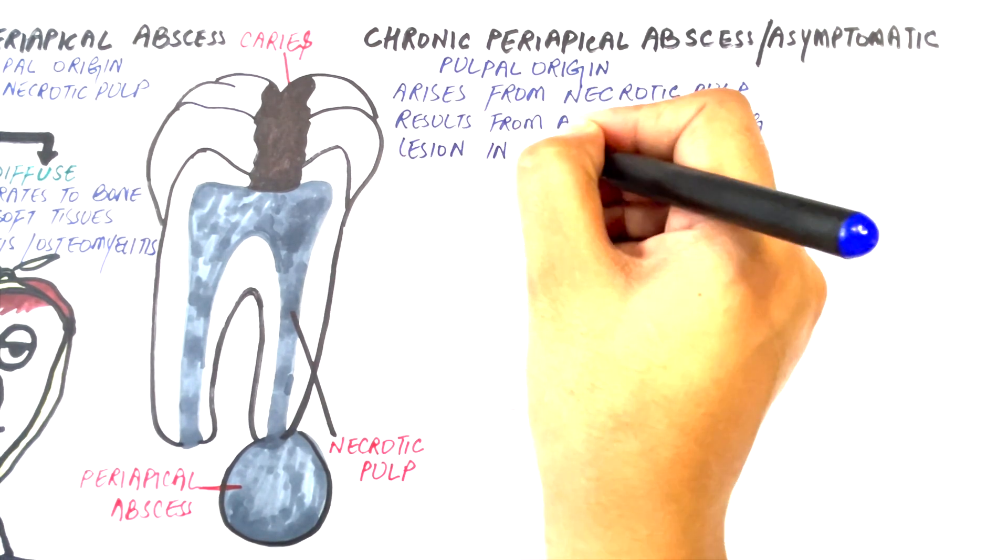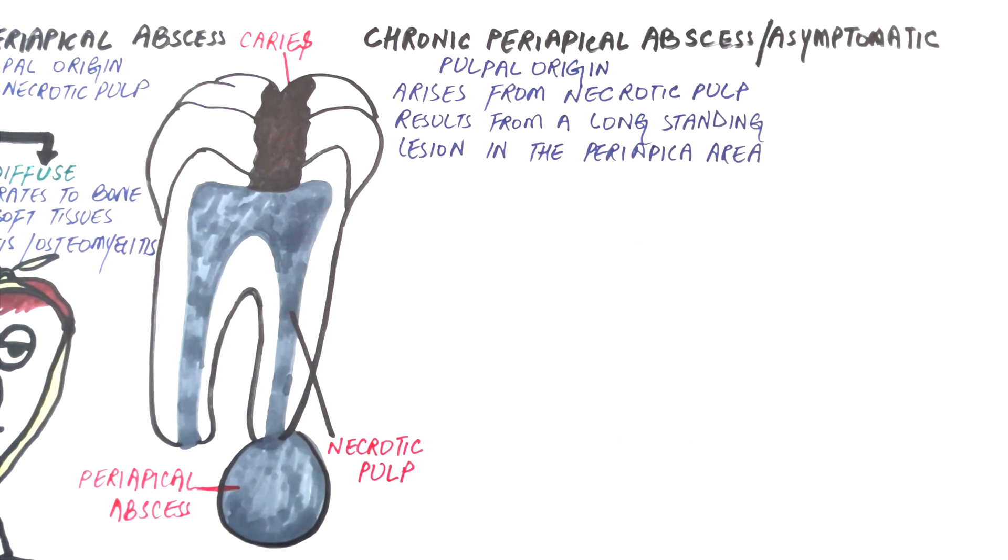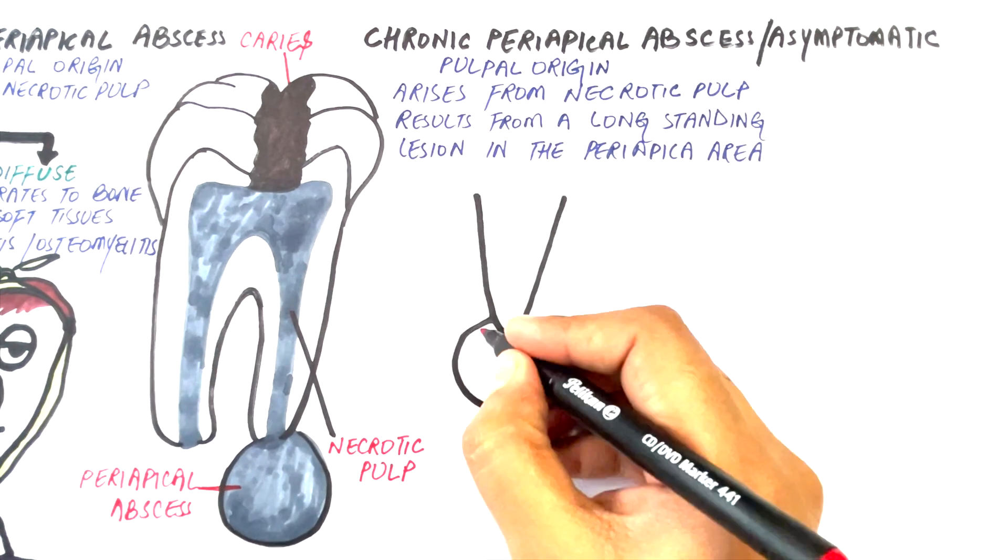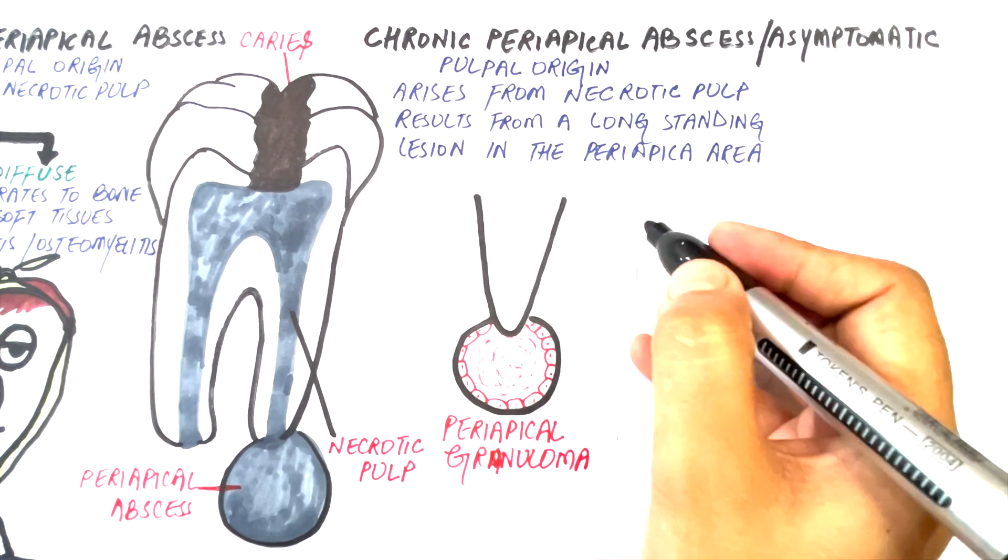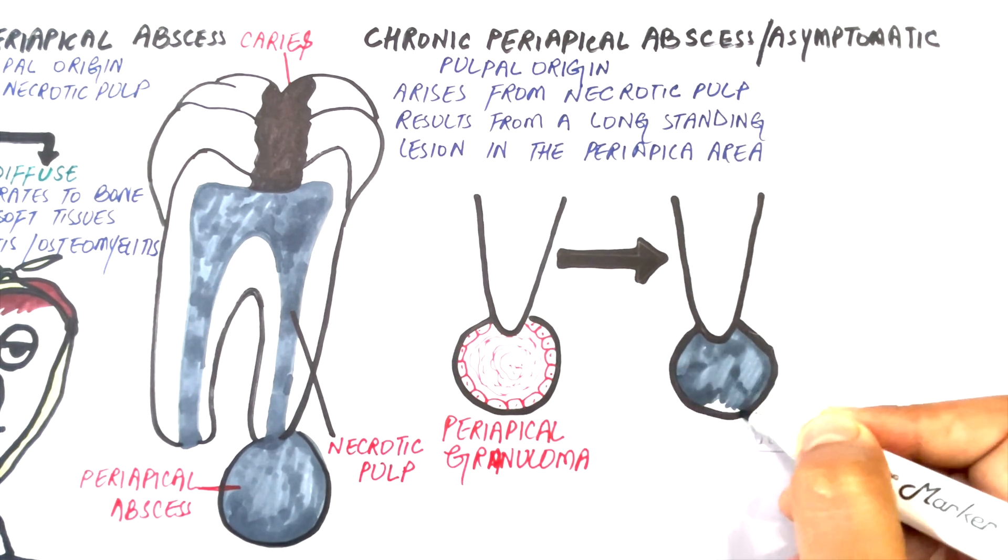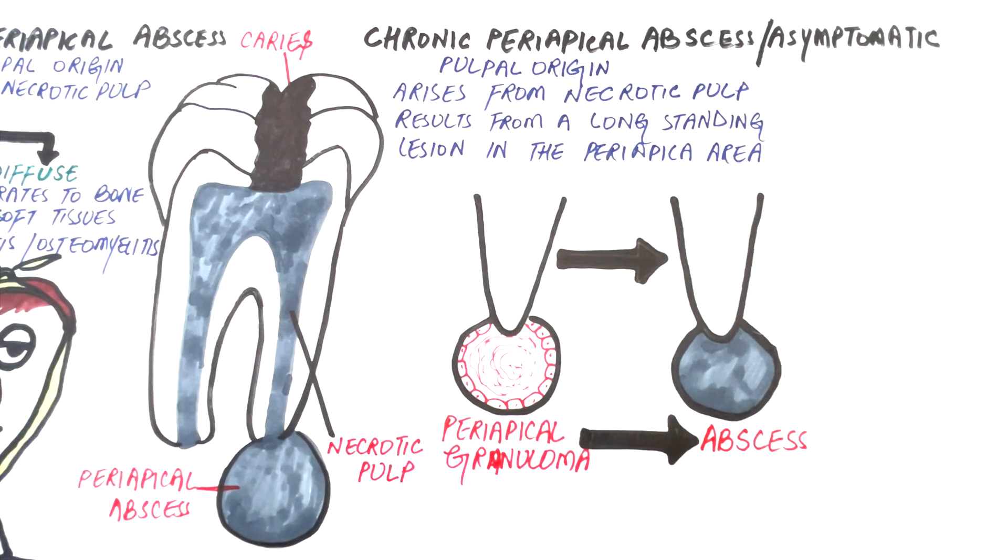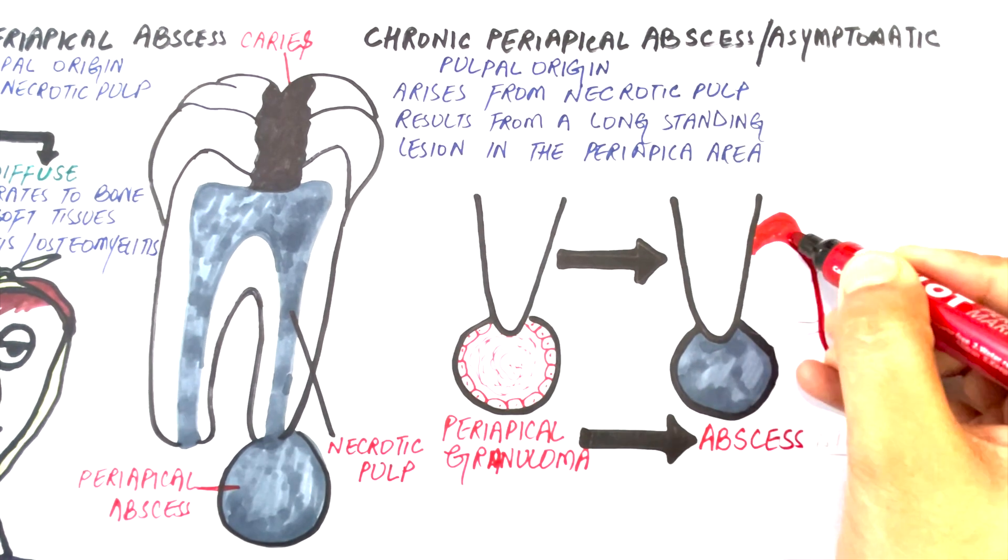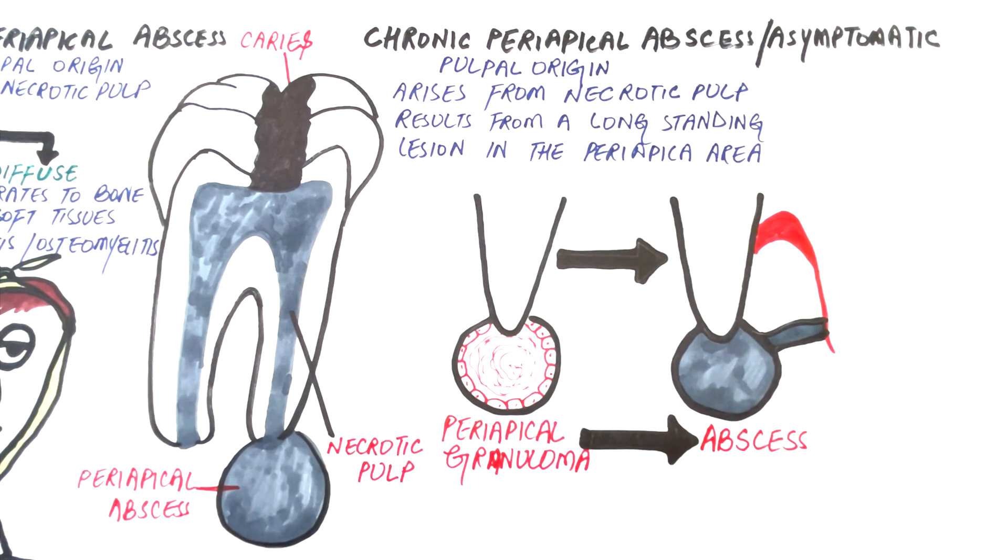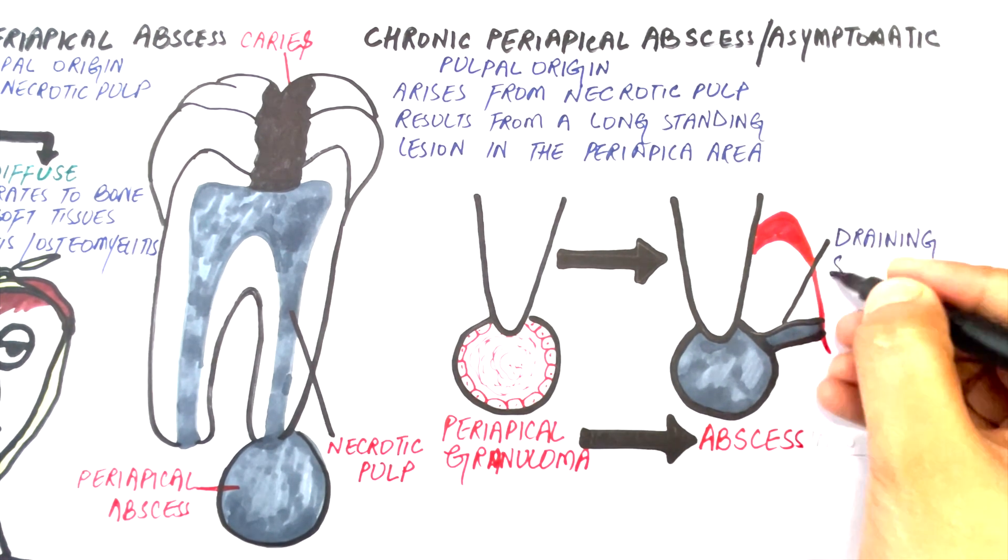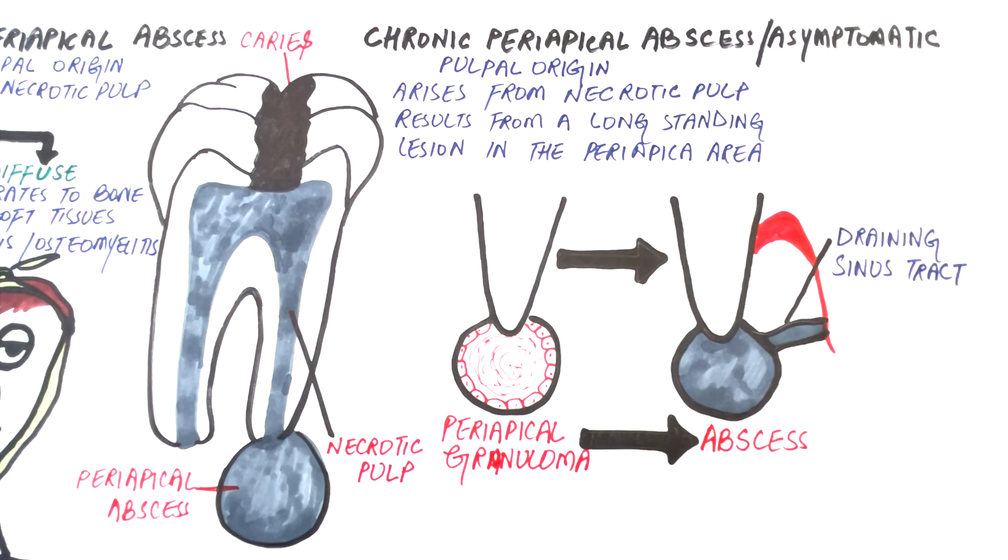A chronic periapical abscess is an inflammatory lesion of pulpal origin that has resulted from a long-standing lesion in the periapical area, such as a periapical granuloma. In chronic periapical abscess, the pus is constantly drained with the help of a sinus tract. The sinus tract is a pathological tract that has connected the abscess to an intraoral or extraoral site.